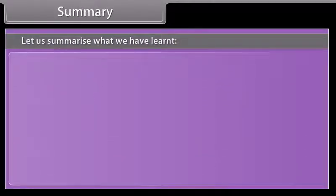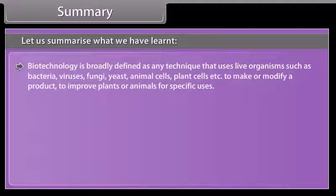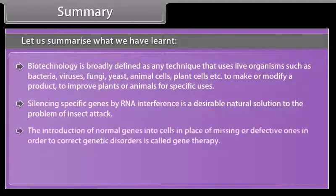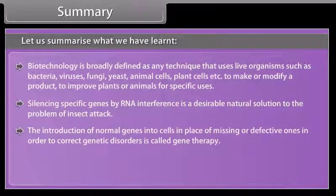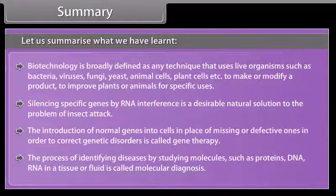Summary. RNA interference is a desirable natural solution to the problem of insect attack. The introduction of normal genes into cells in place of missing or defective ones in order to correct genetic disorders is called gene therapy. The process of identifying diseases by studying molecules such as proteins, DNA, and RNA in a tissue or fluid is called molecular diagnosis.